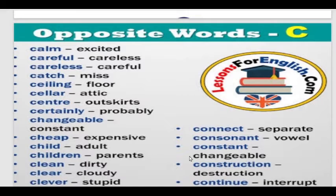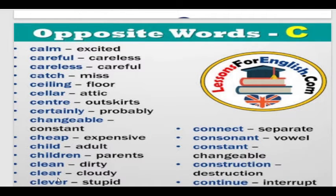Some more examples: Calm – Excited. Careful – Careless. Catch – Miss. Ceiling – Floor. Cellar – Attic. Center – Outskirts. Certainly – Probably. Changeable – Constant. Cheap – Expensive. Child – Adult. Children – Parents. Clean – Dirty. Clear – Cloudy. Clever – Stupid. Connect – Separate. Consonant – Vowel. Construction – Destruction.